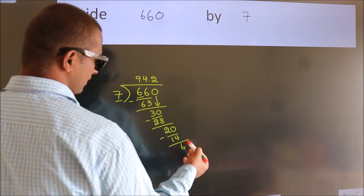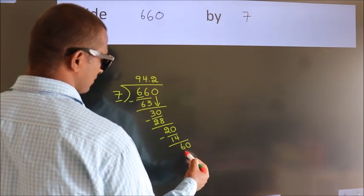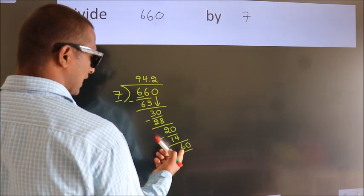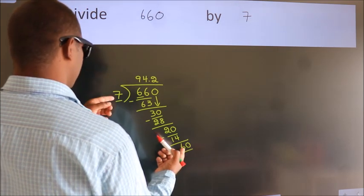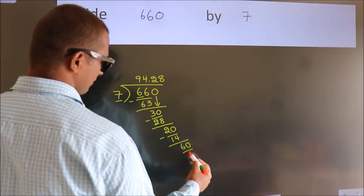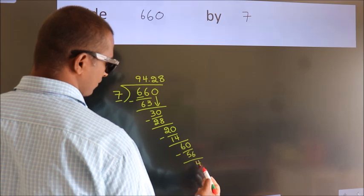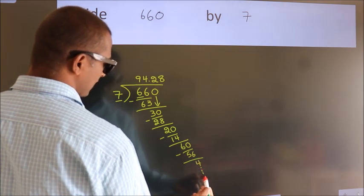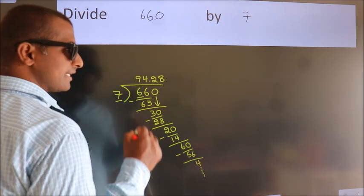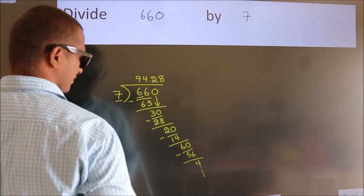After this, we already have the decimal. So, directly take 0. So, 60. A number close to 60 in 7 table is 7 eights, 56. Now, we subtract. We get 4. And the division continues. It is enough if we do up to 2 decimal places. Yes. Thank you.